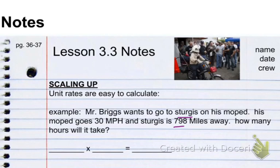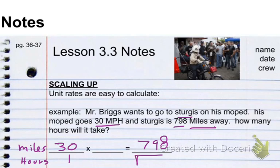Well, first I have to set up my problem. I'm going to do miles. I'm going to do hours. Now, I already know my unit rate: 30 miles for every one hour. And I know how many miles I want to go. I know I want to go 798 miles. So, the question is, how many hours will it take?